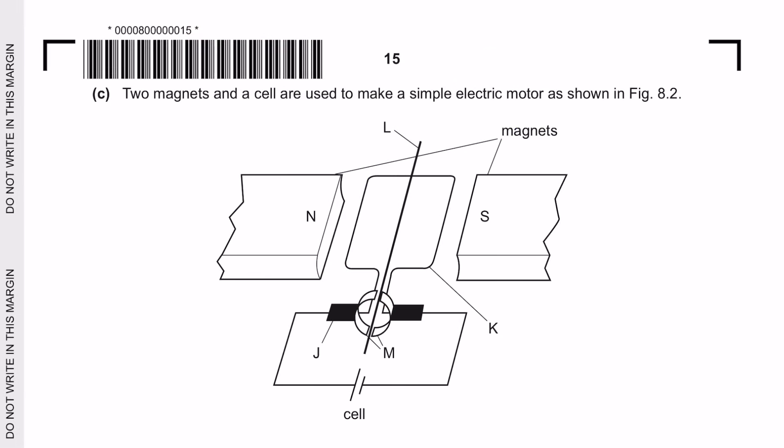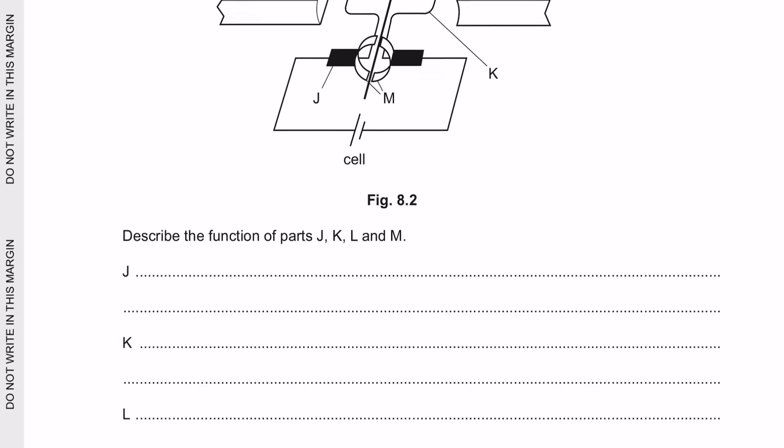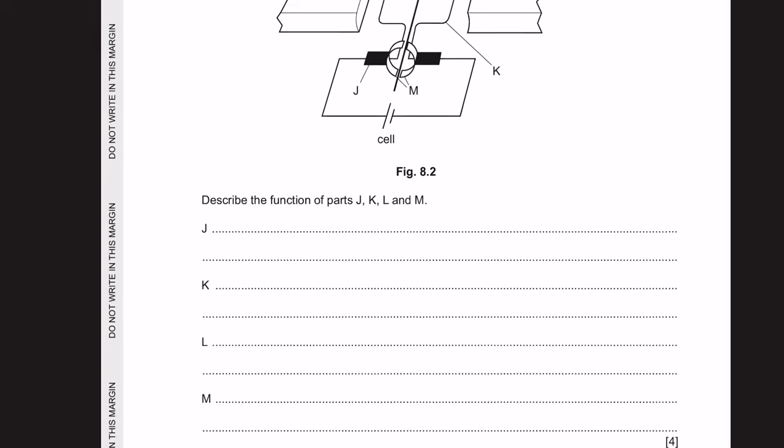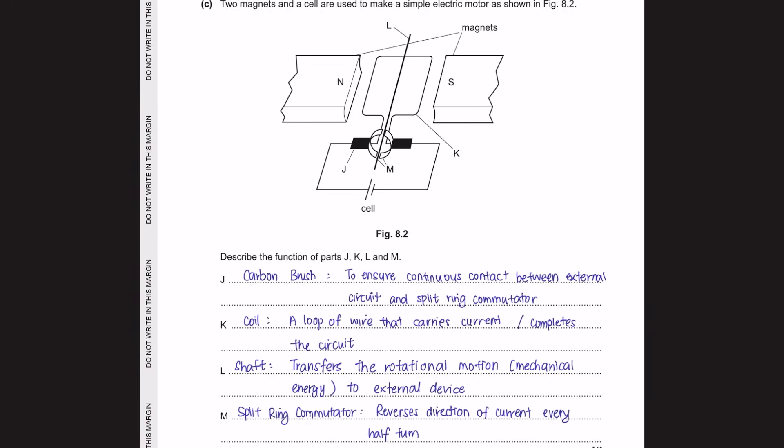Next question C. Two magnets and a cell are used to make a simple electric motor as shown in figure 8.2. You are asked to describe the function of parts J, K, L and M. So I've written for you all the functions and the name of the parts and I think you can go through them by yourself as these are all theoretical questions and I don't think there's any explanation needed.